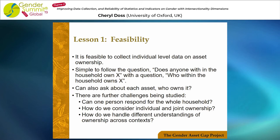I'm going to talk about five lessons that we learned. The first one is that it's feasible to do this. We demonstrated that across a range of contexts, it's fairly simple to follow the question 'does anyone within the household own X, whatever asset' with a question simply asking 'who within the household owns it?' We can also ask about each asset individually — because we had a household asset inventory, for each of those assets we could ask who owns it.